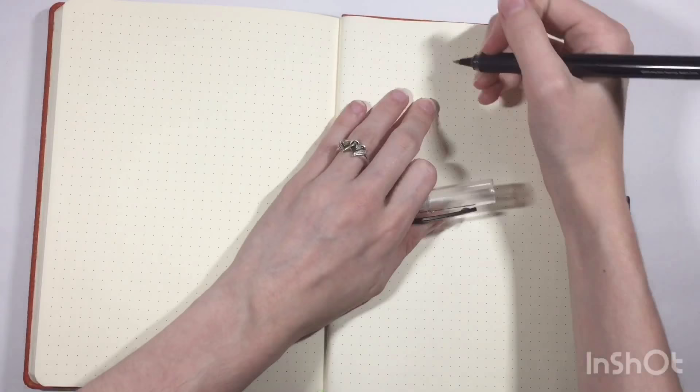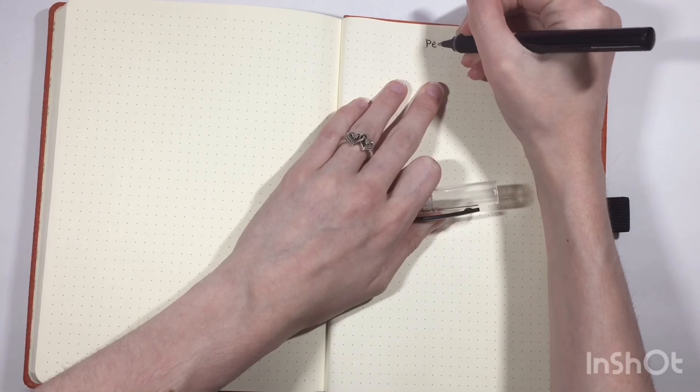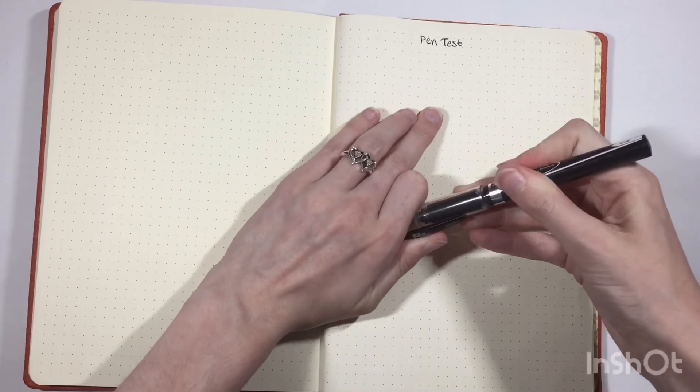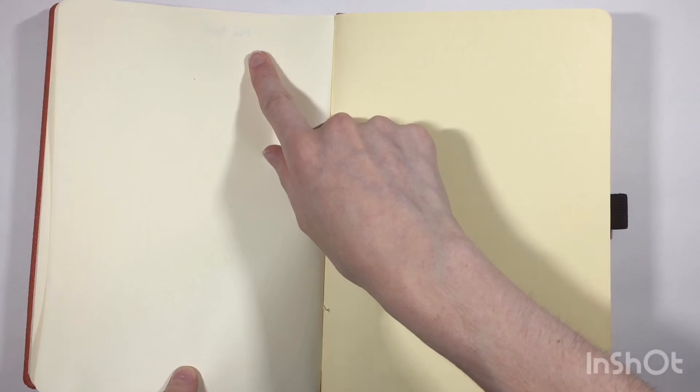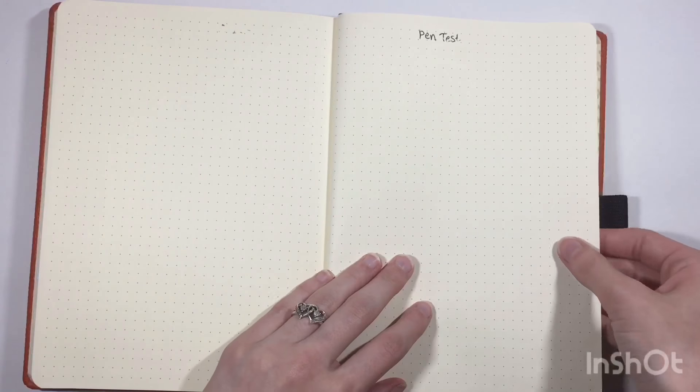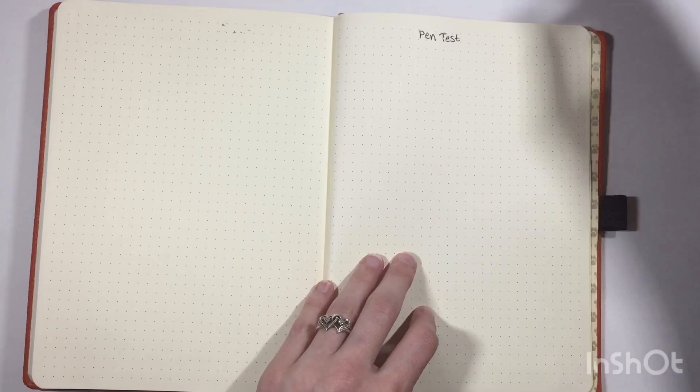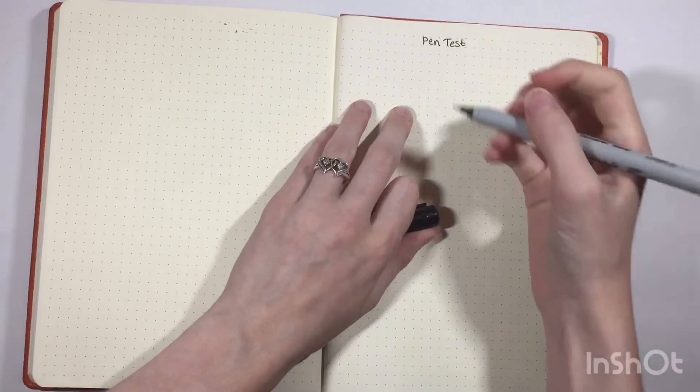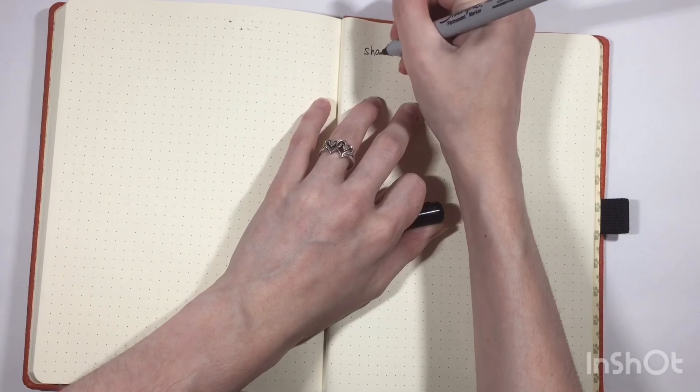I might make a pen test page on this one, so we can see what bleeds or what doesn't bleed. See, over here it has a little bit of shadowing, but it's not bleeding. So, for example, a Sharpie, which usually bleeds through everything, we'll test.